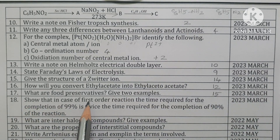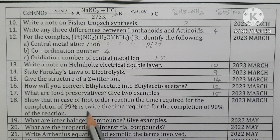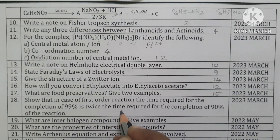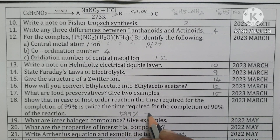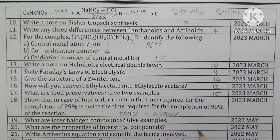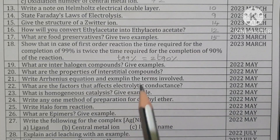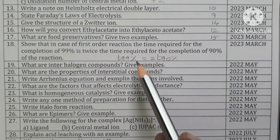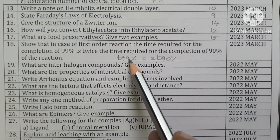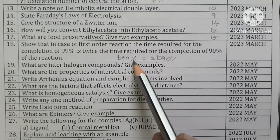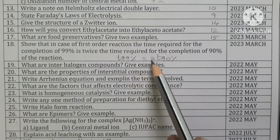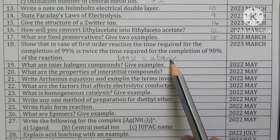In the case of a first-order reaction, the time required for completion of 99% of the reaction is two times the time required for 90% completion. The second question: time required for 99.9% completion of the reaction is 10 times its half-life period.